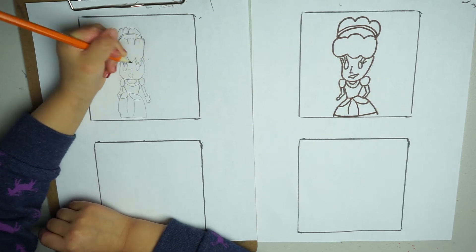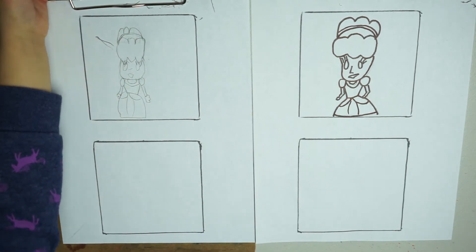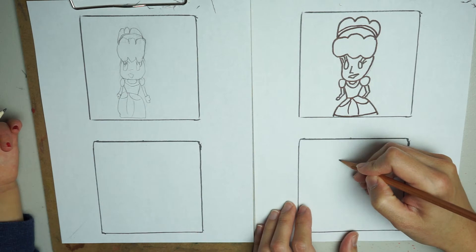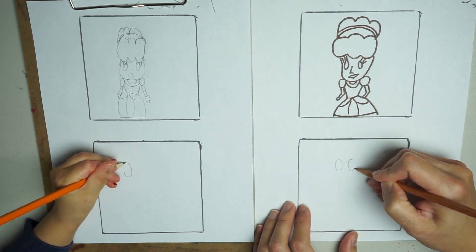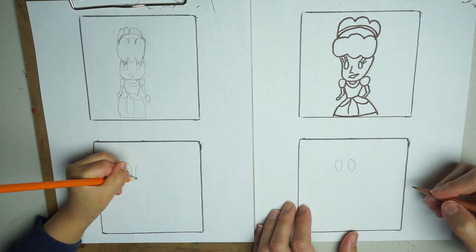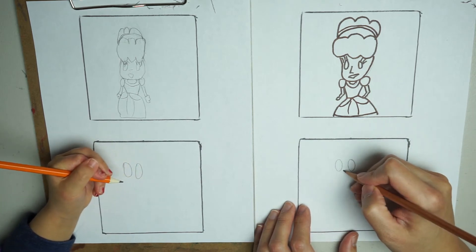So that's Cinderella. And then we're going to draw Snow White. So we're going to draw her big eyes, okay? Big old eyes. She has a small nose, okay? Right here.